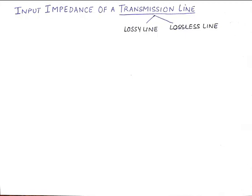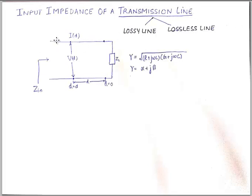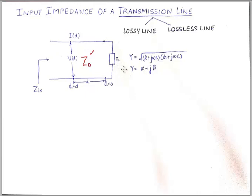If we look at the transmission line, it has a characteristic impedance given by Z0. The impedance offered by this transmission line is known as the characteristic impedance, calculated using the distributed parameters of the transmission line. Every transmission line eventually ends at a certain load, because the primary objective of a transmission line is to carry a signal and deliver it to some load. So we have ZL as the load impedance.